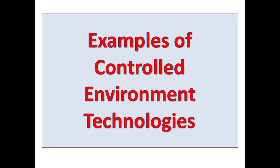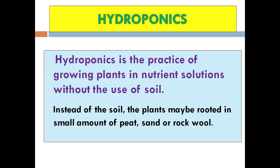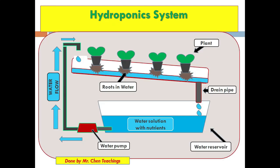Now for examples of controlled environment technology. The rest of the lesson will focus on different controlled environmental technologies. Hydroponics is the practice of growing plants in nutrient solutions without the use of soil. Instead of soil, the plants may be rooted in small amounts of peat, sand, or rock wool. It is basically growing plants in a liquid nutrient solution — it could be moving water or still water.